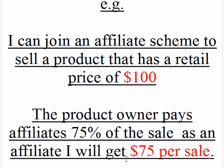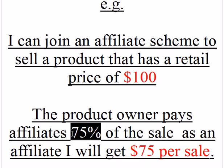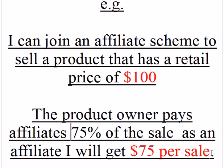That will earn me $75 per sale. That is for a product with a retail price of $100 — I'll be getting $75 a sale in the form of a commission, a 75% commission. This is quite common, and in some instances you will find that some merchants give you up to 100% commission for every sale resulting from the link that they give to you.